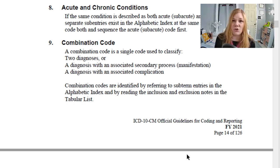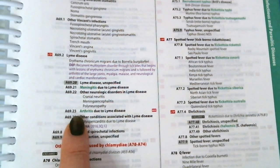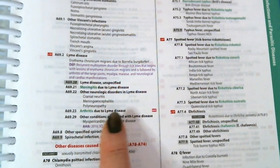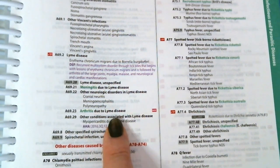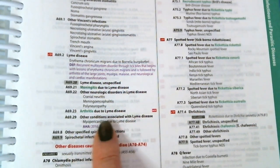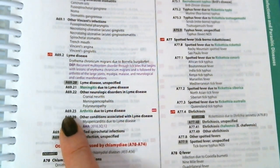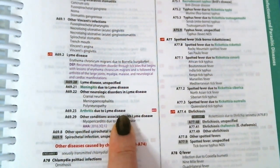If a combination code exists, you should use that combination code and not the two codes separately. For example, A69.23 is arthritis due to Lyme disease. There are separate codes for arthritis and for Lyme disease, but if we have arthritis due to Lyme disease, we use this combination code.